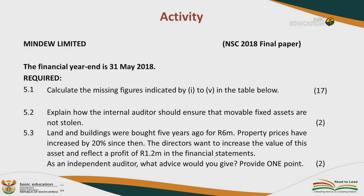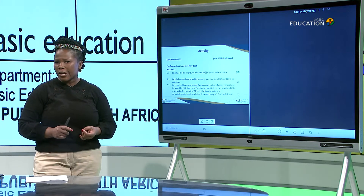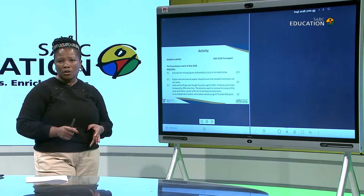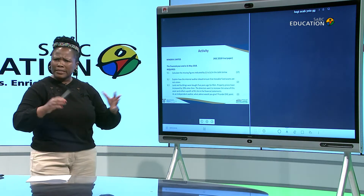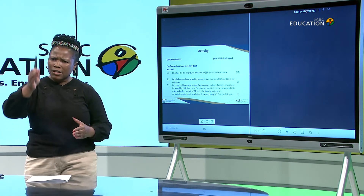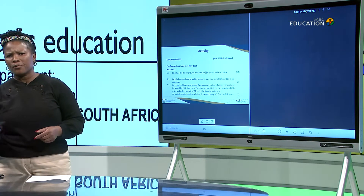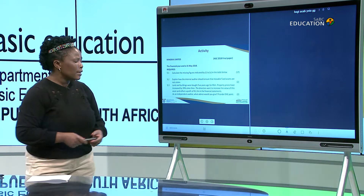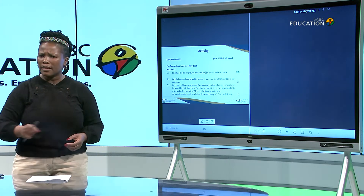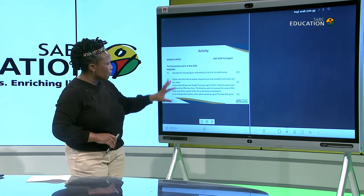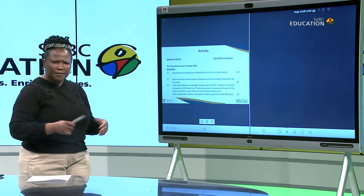The question asks: explain how the internal auditor will ensure that fixed assets are not stolen. An asset register for each and every asset must be kept in the business. Physical stock counting of assets must take place on regular and random intervals. Assets must be signed for — if anybody takes an asset to use, they must record it in the register. These are some of the points that will assist the internal auditor in safeguarding business assets.